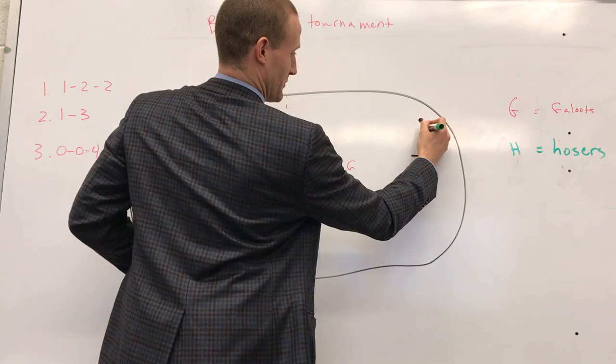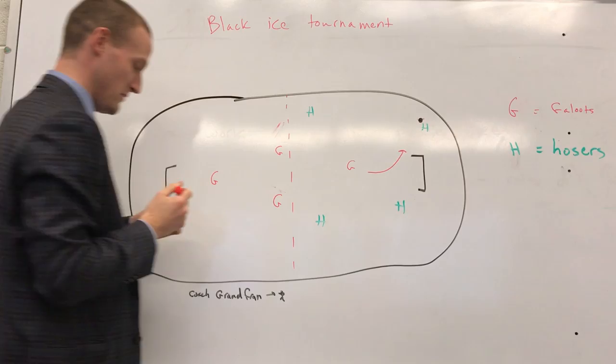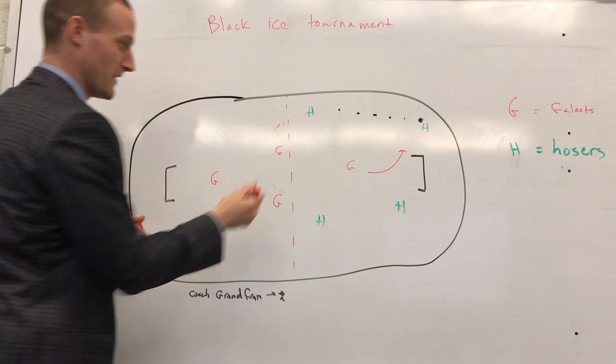What Cam's gonna want to do here is swing nice and low, take away the middle of the ice, force the puck up the wall here. In which case, Robert, this is probably Robert. I think he's a righty.